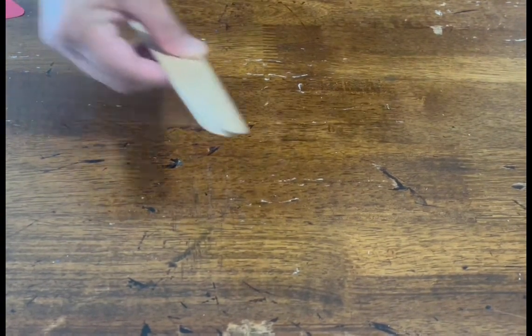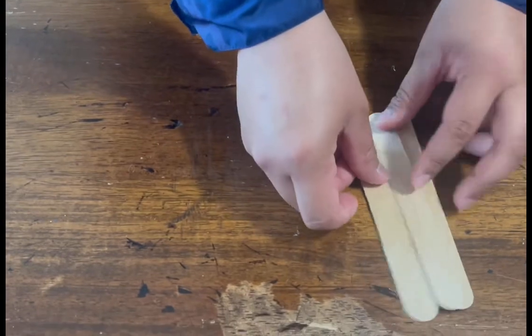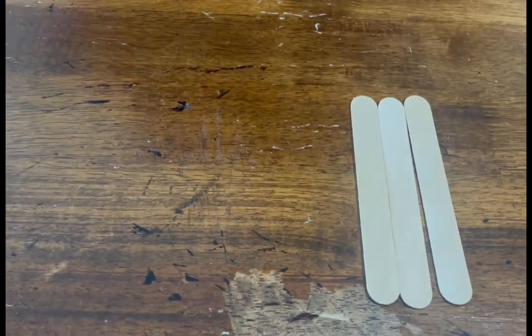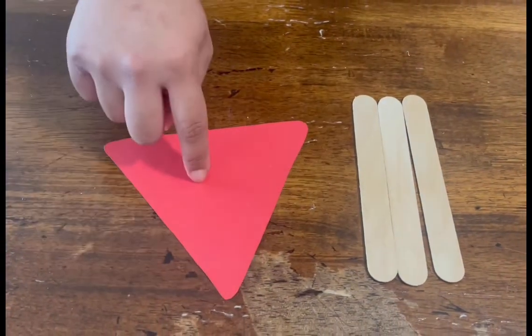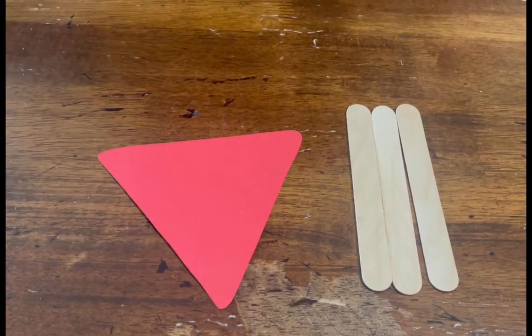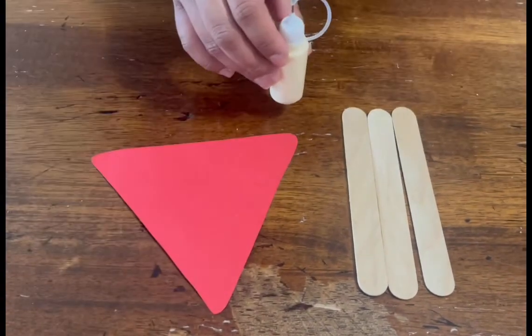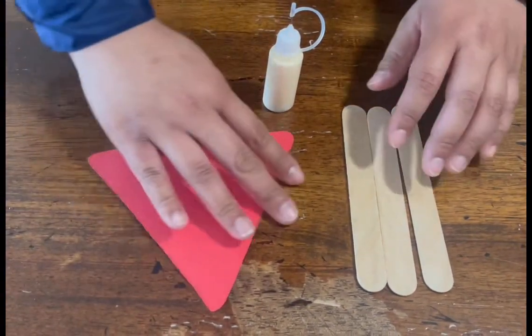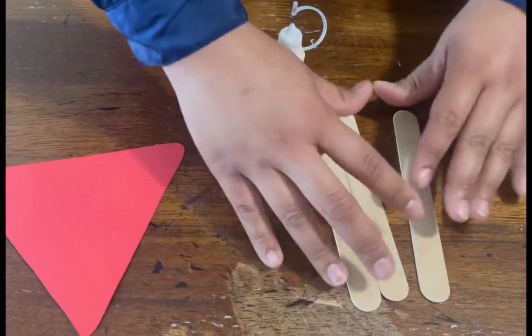Hi guys, Princess here. Today we are going to be making the popsicle ladybug. So in our project we will be needing your three popsicle sticks, your cutout triangle construction paper, and your glue.